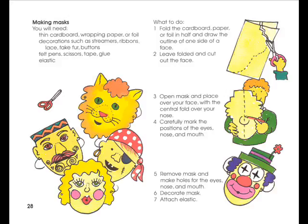Making masks: You will need thin cardboard, wrapping paper or foil, decorations such as streamers, ribbons, lace, fake fur, and buttons, felt pens, scissors, tape, glue, and elastic. What to do: Fold the cardboard, paper, or foil in half and draw the outline of one side of the face. Leave folded and cut out the face. Open the mask and place over your face with the central fold over your nose. Carefully mark the positions of the eyes, nose, and mouth. Remove the mask and make holes for the eyes, nose, and mouth. Decorate the mask and attach elastic.